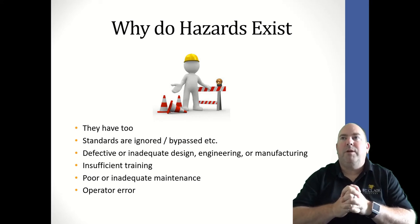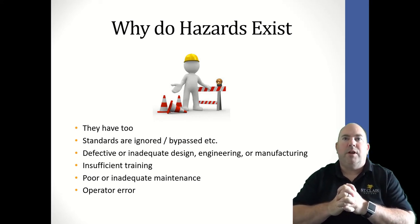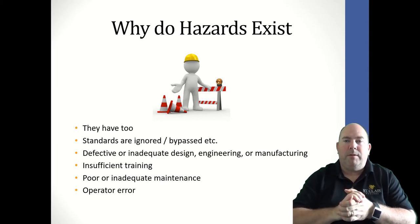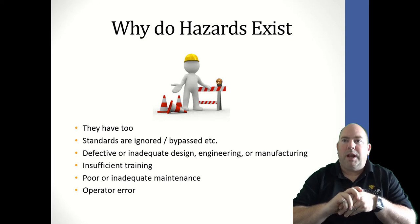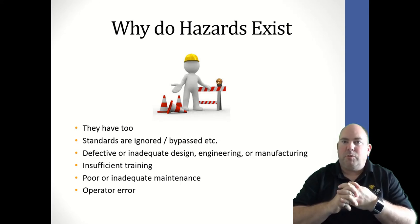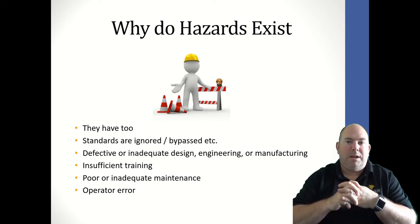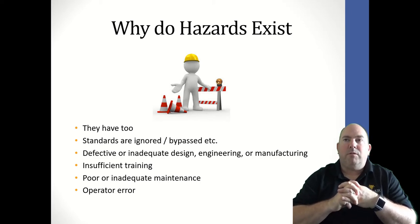Why do hazards exist? Why do we have hazards in our work environments? Sometimes they're just there and there's no way around it — they have to exist. Sometimes they exist because standards have been ignored or bypassed. Sometimes it's because of defective or inadequate design, engineering, or manufacturing. Sometimes hazards exist because people have not been trained properly. Sometimes we have poor or inadequate maintenance. And sometimes it's just operator error.